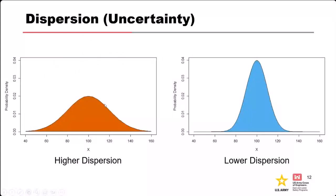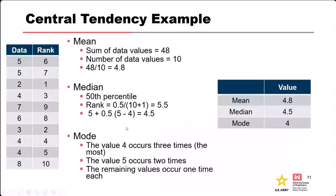This example doesn't show geometric mean, but you could calculate it. One way is to take the log of all the data, calculate the arithmetic average of the logarithms, and then convert back to real space using an inverse log calculation — and that gives you the geometric mean.